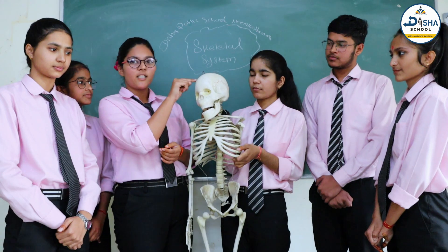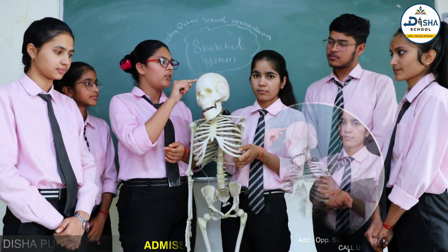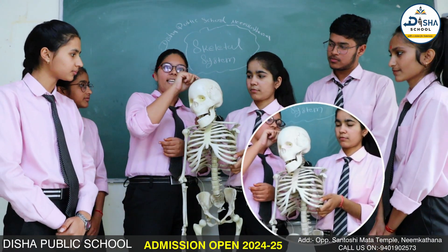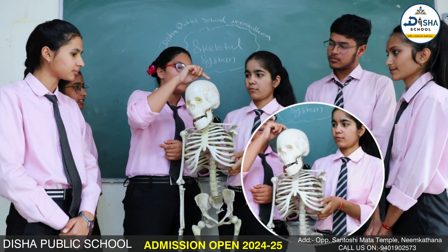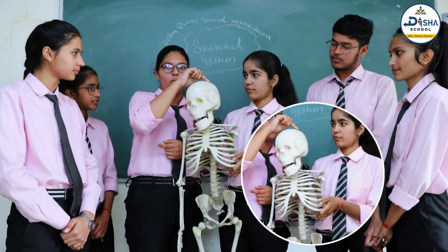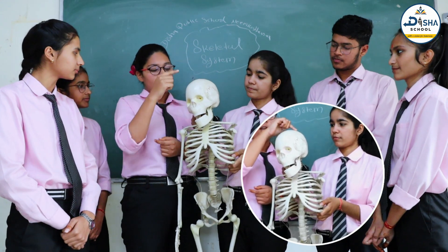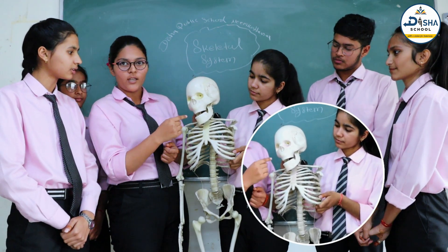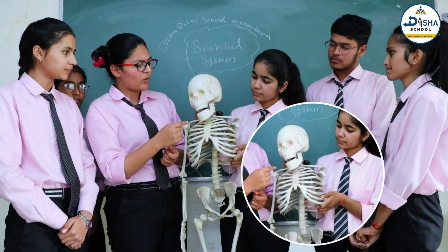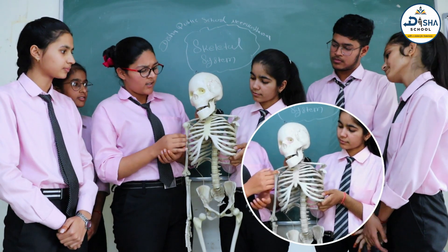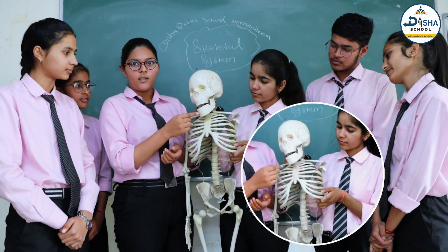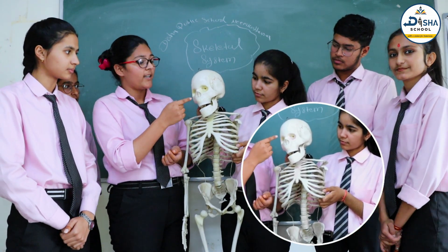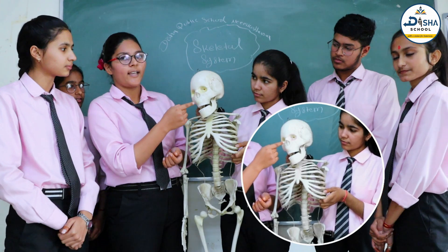Firstly, this part is known as frontal bone. This part is known as parietal bone and this part is known as temporal bone. The frontal part of our face contains 14 bones. Some of these bones are maxilla, mandible, zygomatic, nasal bone, etc.